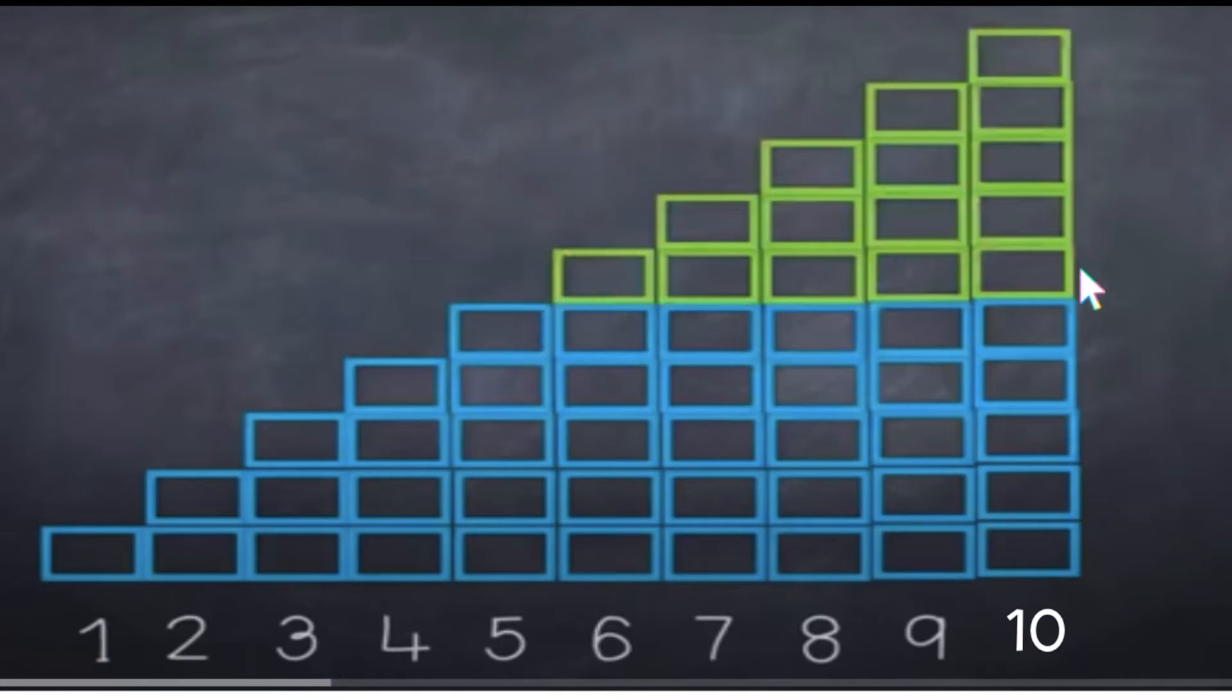But something happens when I get past that number 5 and I go to number 6. Hmm, let's look in this area here. What happens when I go past the number 5? Yep, you're right. The color of the bricks changes.